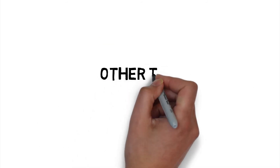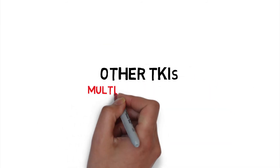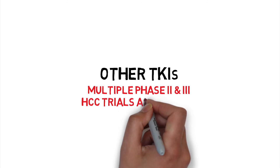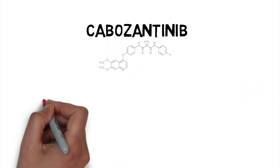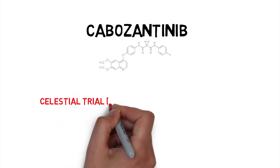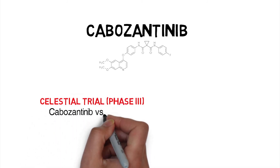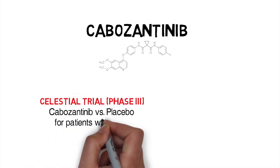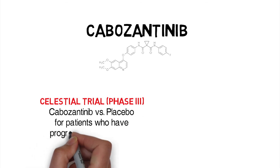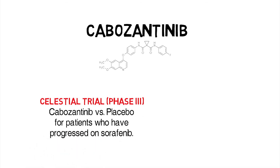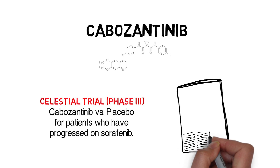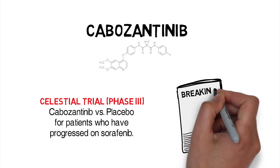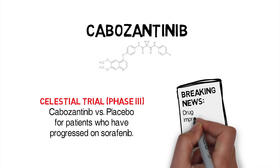In addition, there are multiple Phase 2 and 3 clinical trials on promising new tyrosine kinase inhibitors in liver cancer. At this ASCO GI 2018, we are hearing results of the study of cabozantinib in the second-line setting for advanced liver cancer. The results of this study are eagerly awaited, and a press release suggests that this drug improves survival over placebo.